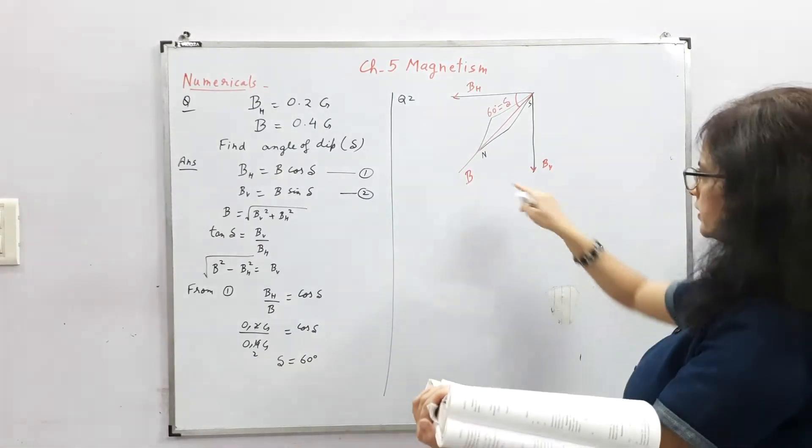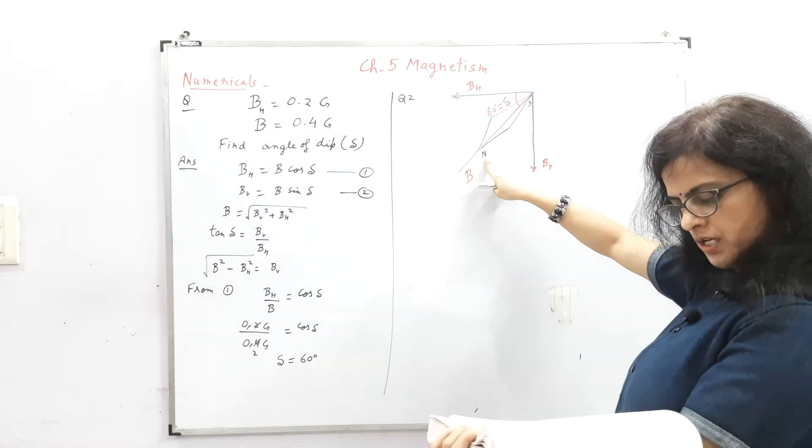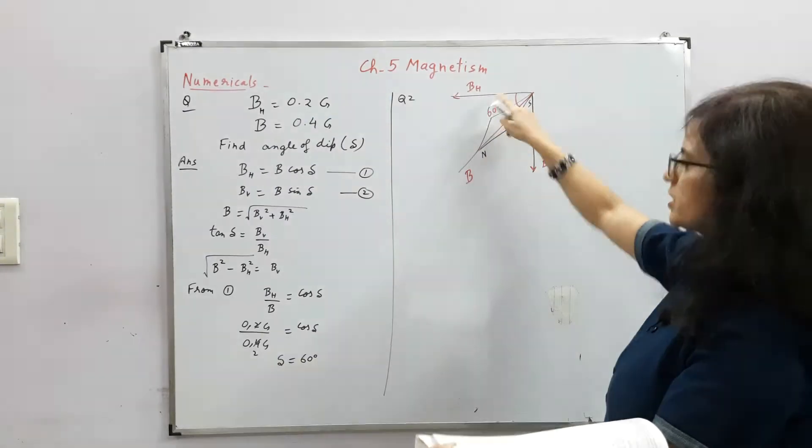You have to understand the language and draw the diagram. North tip down, has its north tip down, 60 degree with the horizontal.